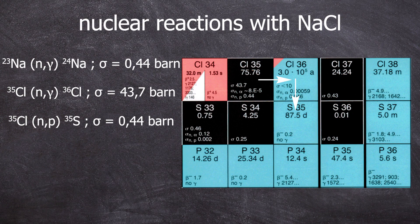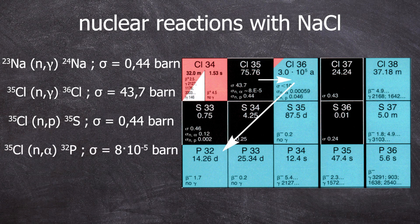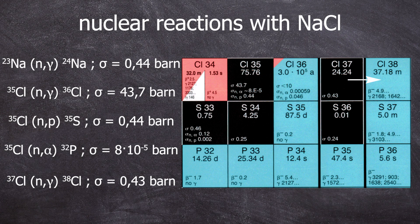Thus, what we end up with are radioisotopes of sodium, chlorine, and even sulfur. We will measure all this in the liquid scintillation counter and on the gamma detector.